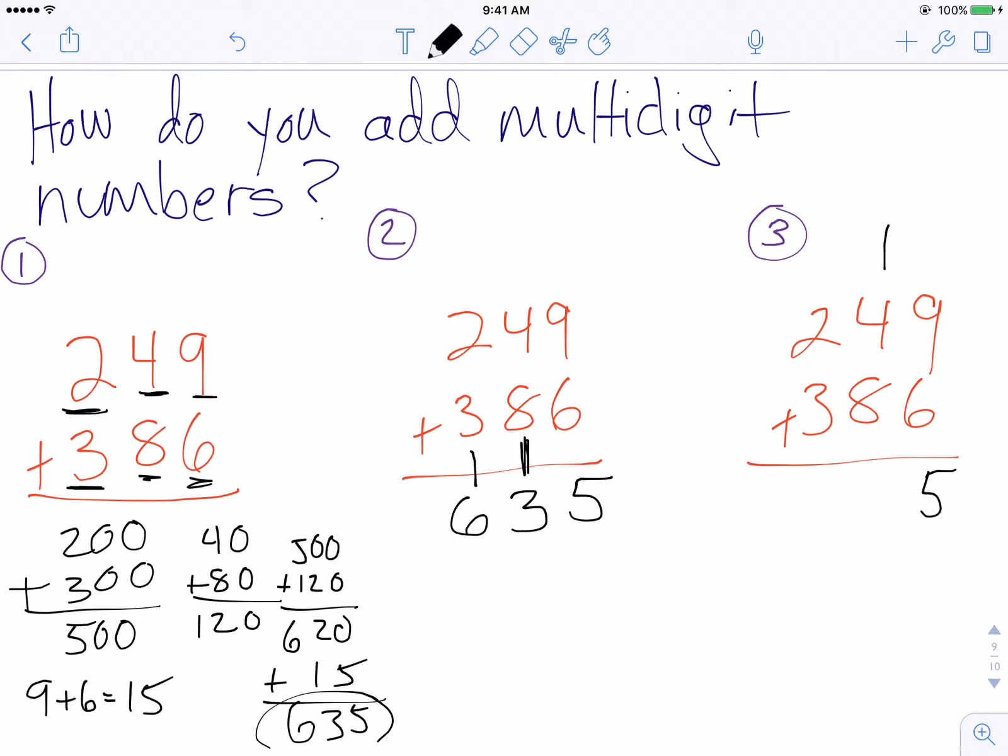4 and 1 is 5 plus 8 is 13. Regroup my 1 up at the top. And 3 plus 2 is 5 plus 1 is 6. So those are three different methods that you can use for adding multi-digit numbers together.